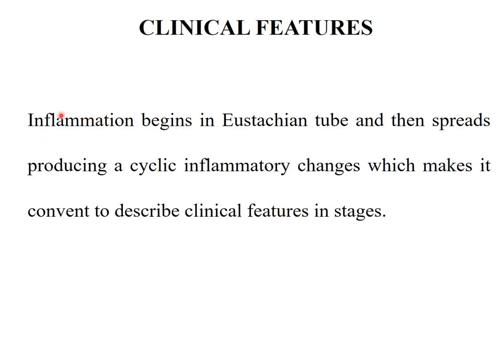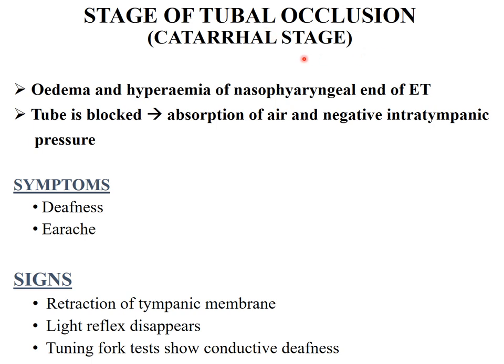Clinical features usually occur due to inflammation that begins in the Eustachian tube, spreading and producing cyclical inflammatory changes. The stage of tubal occlusion, or catarrhal stage: edema and hyperemia of the nasopharyngeal end of the Eustachian tube blocks the tube, leading to absorption of air and negative intratympanic pressure causing retraction of the eardrum. Symptoms are mild — starting with mild earache and mild hearing loss. On otoscopy, the normal light reflex is lost, the tympanic membrane is retracted, and tuning fork tests show conductive hearing loss.